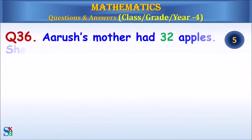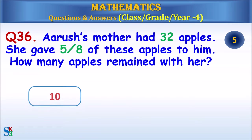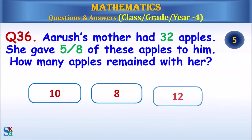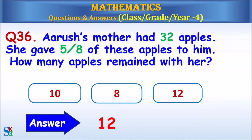Question 36: Arush's mother had 32 apples. She gave him 5 eighths of these apples to him. How many apples remained with her? The answer is 12.